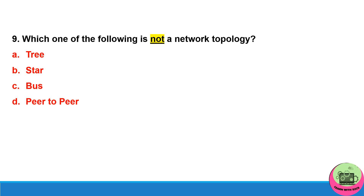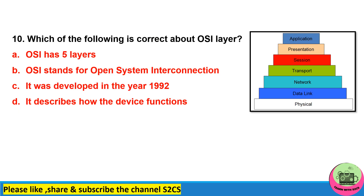Question 9: which one of the following is not a network topology? The answer will be peer-to-peer — as you have heard, this is a kind of network, not a topology. The other three options are topologies, including a combination of bus topology and star topology.